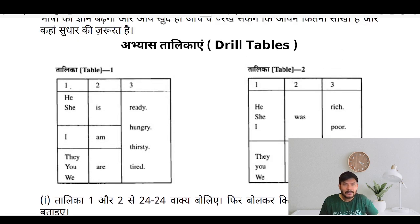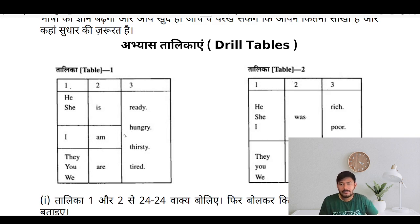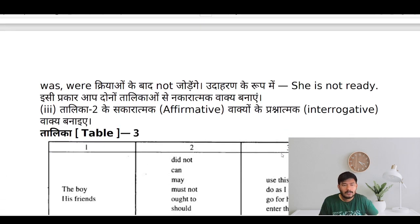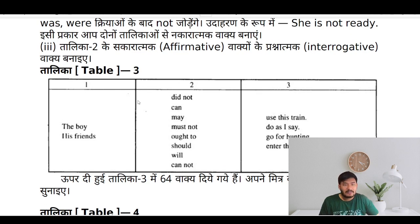This is the drill table in which you can use examples like: he is ready, he is hungry, she is thirsty. Like this you can make sentences and speak in front of the screen. He was rich, he was poor. Visit table 3 — you can mask this and speak in front of the screen and learn how to speak out.